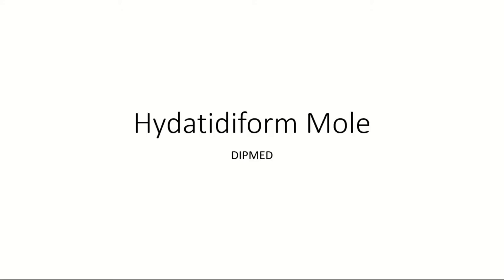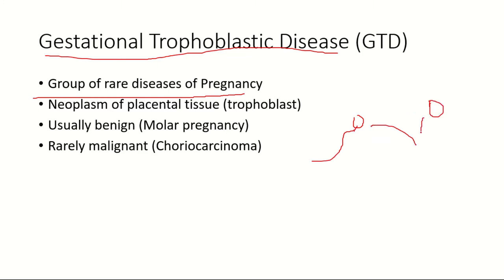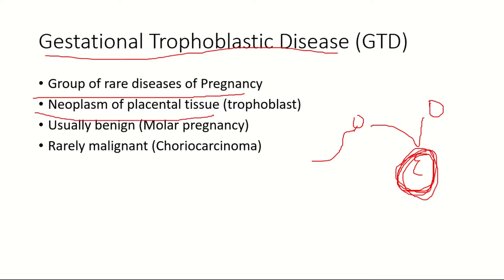Today's session is about hydatidiform mole. Hydatidiform mole is a form of gestational trophoblastic disease, which is a group of rare diseases of pregnancy. Normally during conception, a normal sperm and a normal egg fertilize to form an embryo that settles into the uterus and gives rise to a baby. But in gestational trophoblastic disease, there is no formation of an embryo; instead there is formation of trophoblastic cells which grow and give rise to neoplasm of the placental tissue.